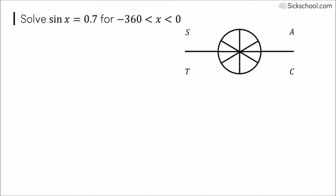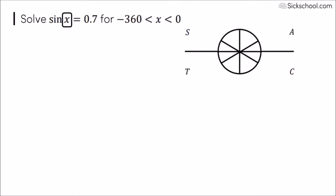In this question, the equation says sine is positive, which you get from angles in the all quadrant, where everything is positive, and the sine quadrant, where only sine is positive.